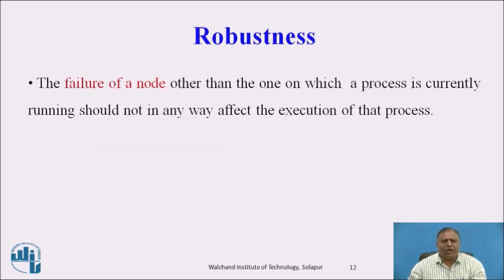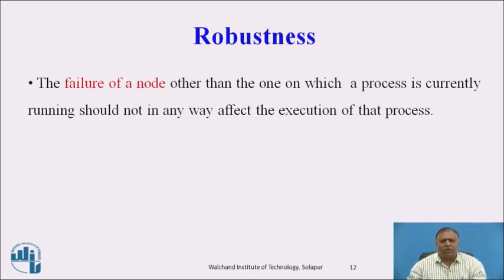Robustness: The failure of a node other than the one on which a process is currently running should not in any way affect the execution of that process. If one node fails, the execution will be done on another node. Robustness is therefore one of the key issues in process migration — ensuring the execution of a process does not disturb other processes on the node.